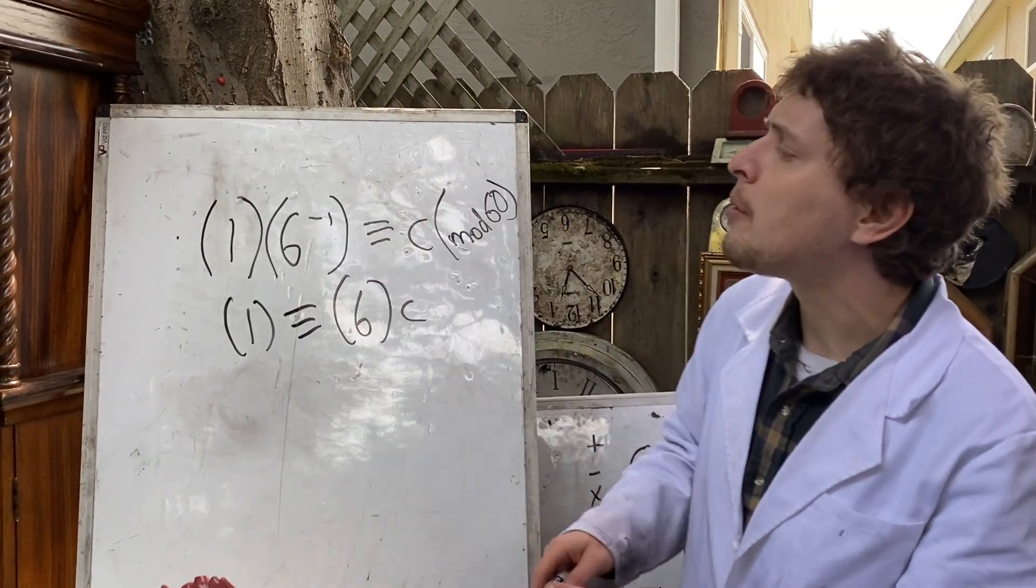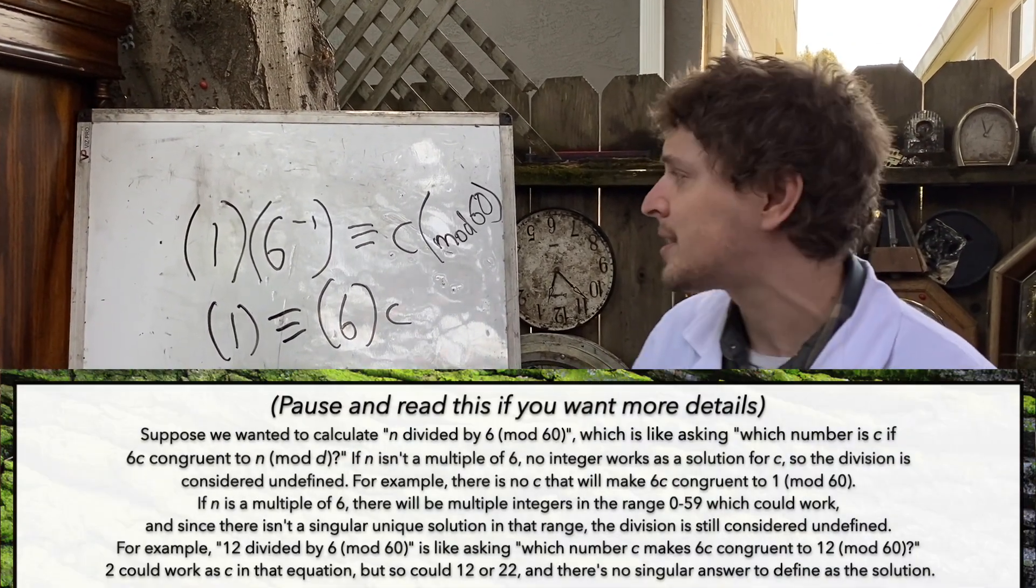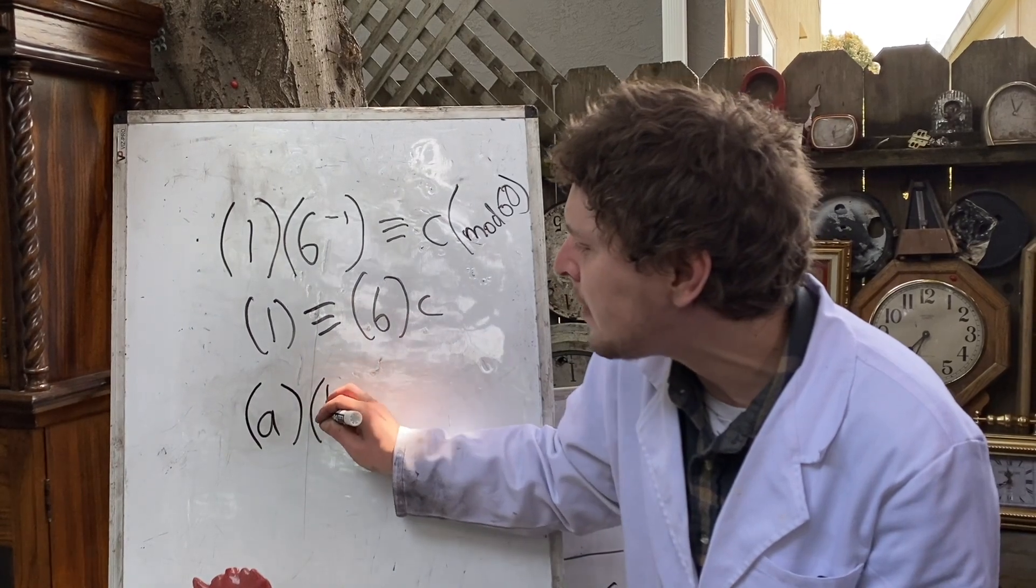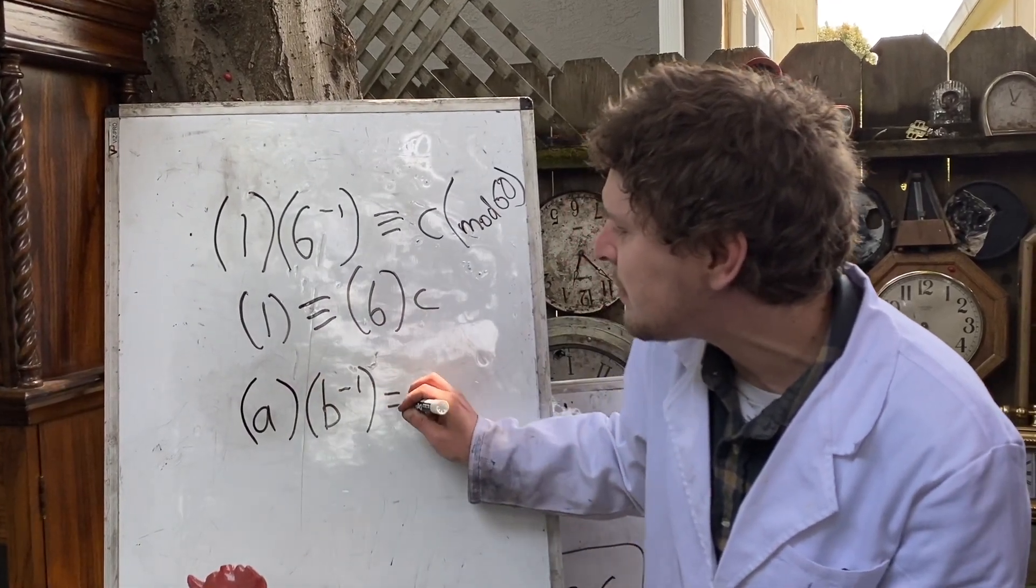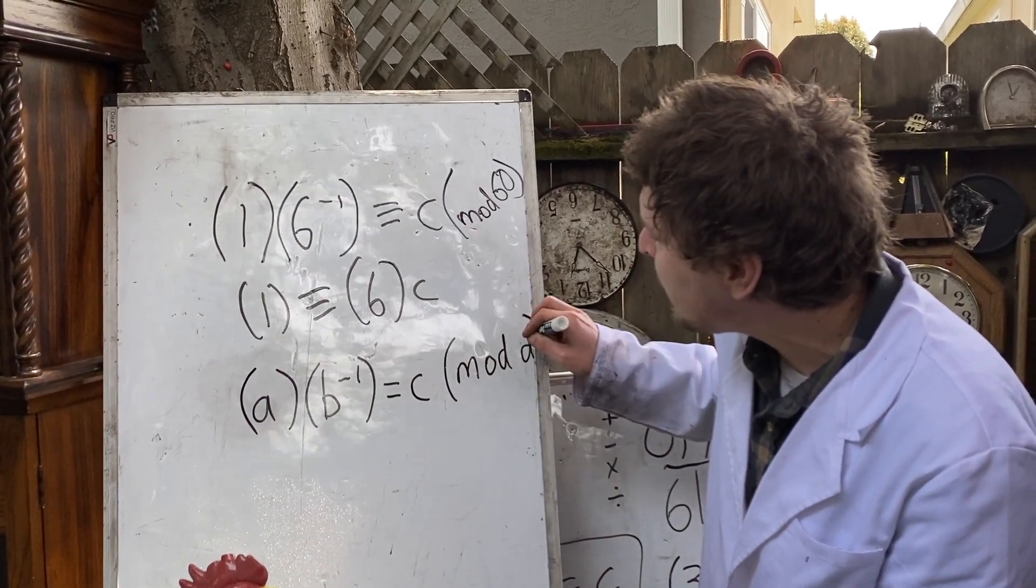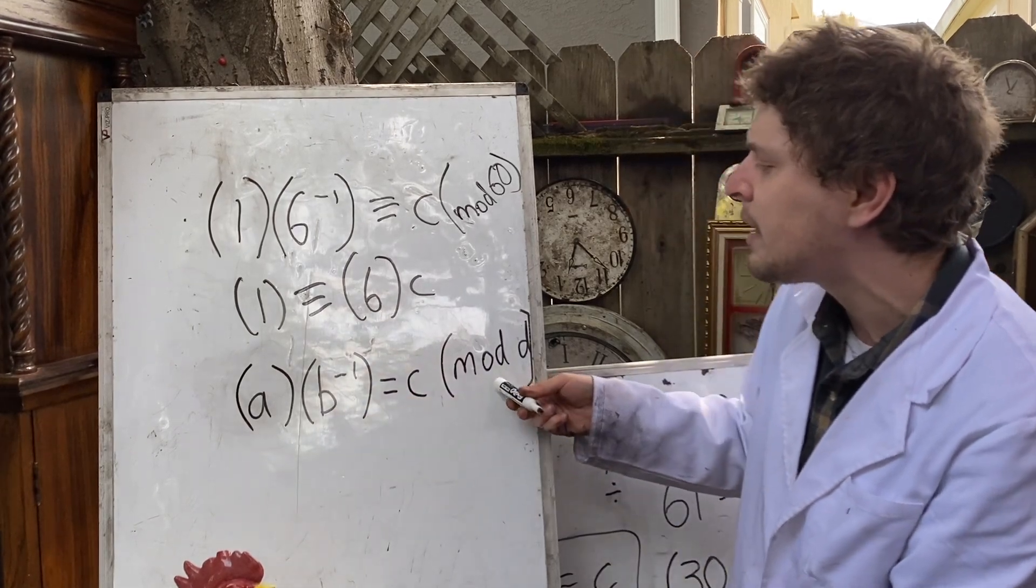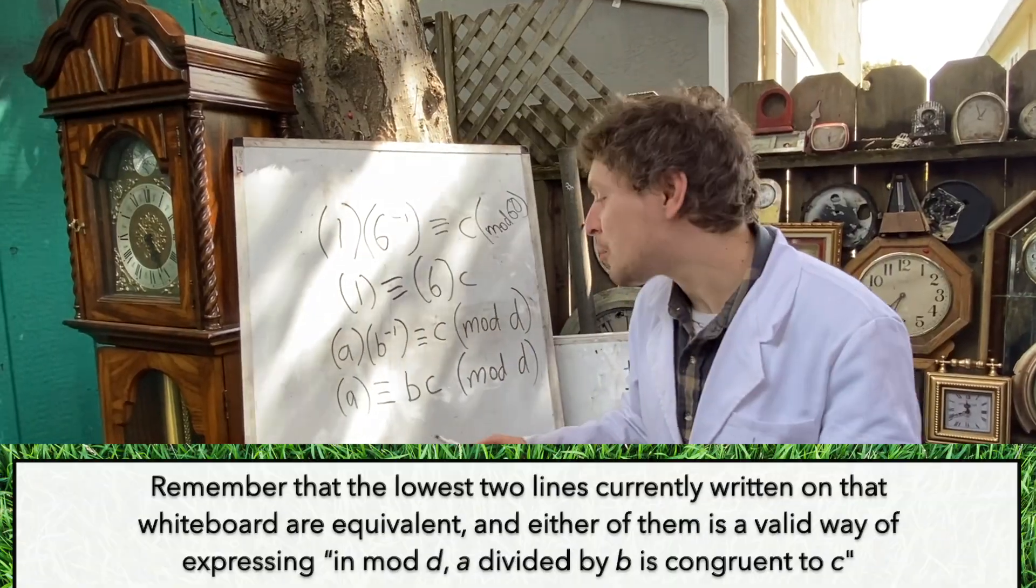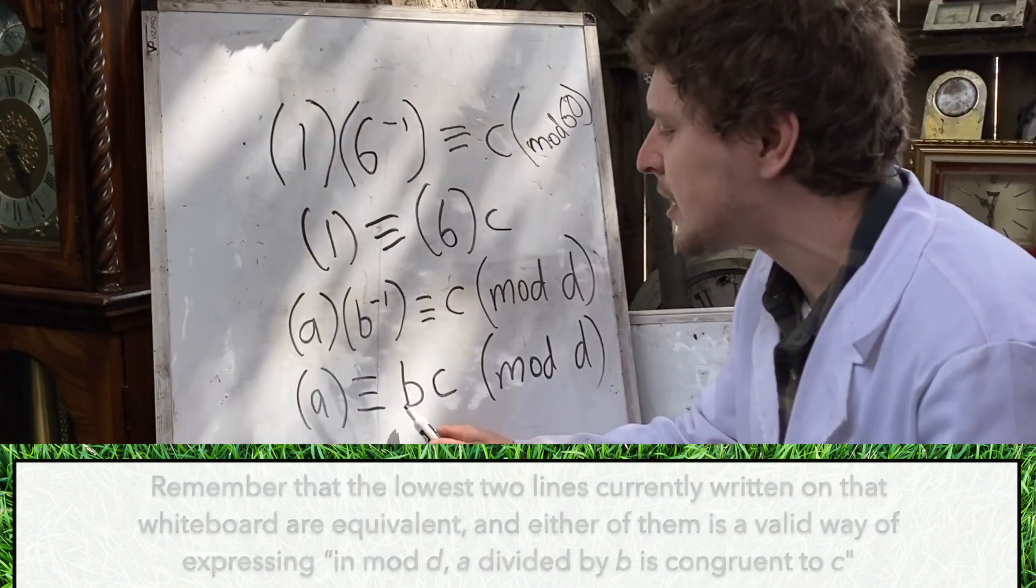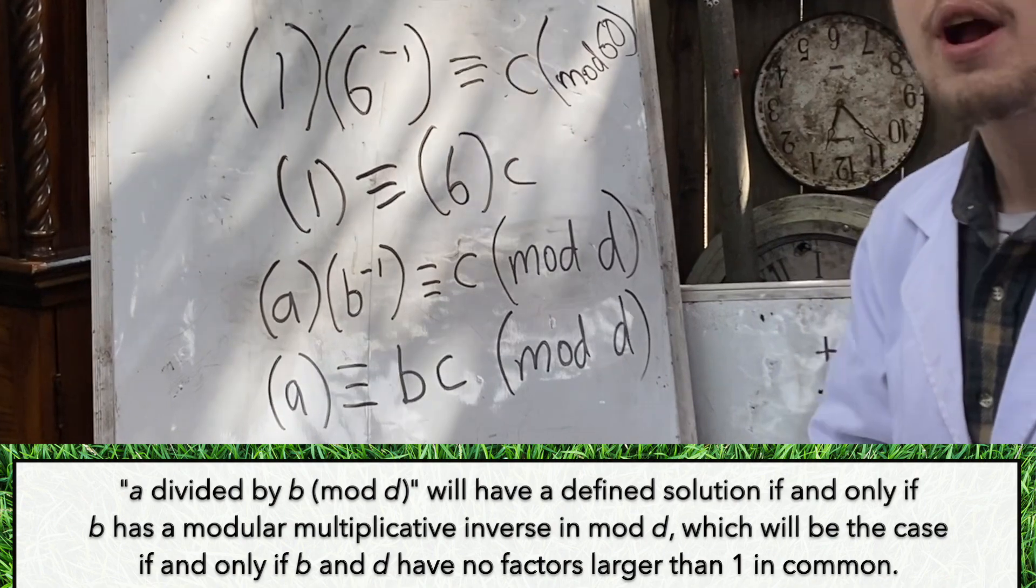Since 6 doesn't have a modular multiplicative inverse in this mod, we're not going to be able to divide anything by 6 here. In general, if I try and take a divided by b to get some c in some mod d, this will only be defined when this modular multiplicative inverse of b in the given mod exists.